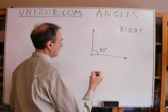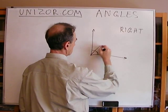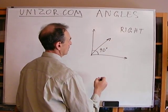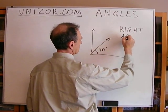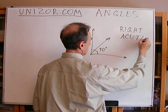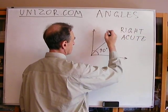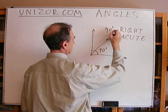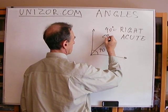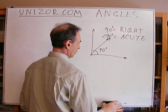Now, the angle which is less than 90 degrees is called acute. So this is 90 degrees. Less than 90 degrees is called acute.